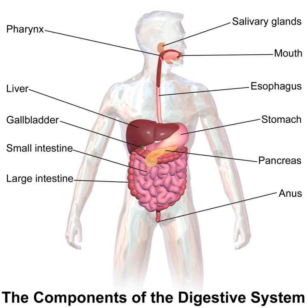To aid in the digestion of their food, animals evolved organs such as beaks, tongues, teeth, a crop, gizzard, and others.